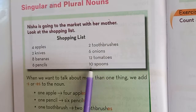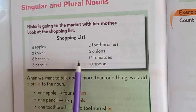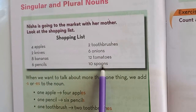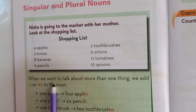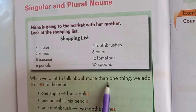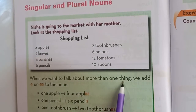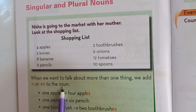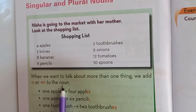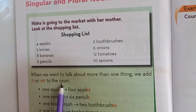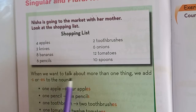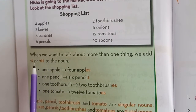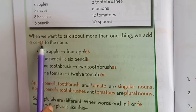See all the words have S or ES at the end. So when we want to talk about more than one thing, we add S or ES to the noun. If we are talking about more than one thing, that's plural. And when we are using plural, we add S or ES.